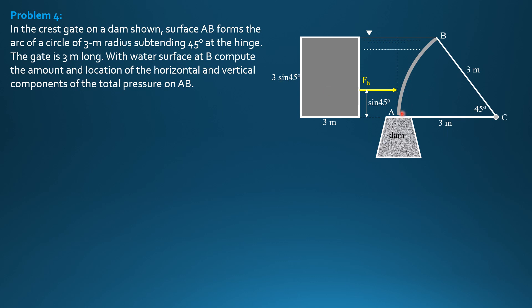Then we draw, for the vertical component, we draw lines through the endpoints up to the liquid surface, water surface. So at A, we stop here. At B, we do not draw vertical line anymore because this is already the liquid surface.